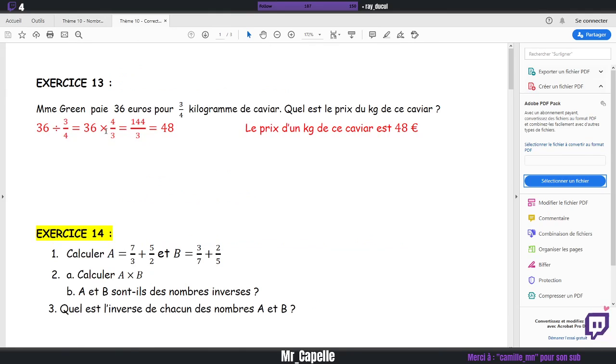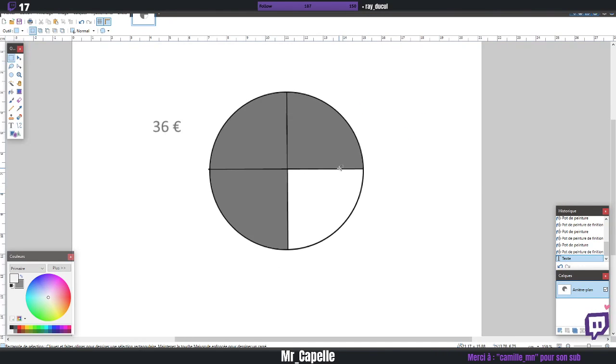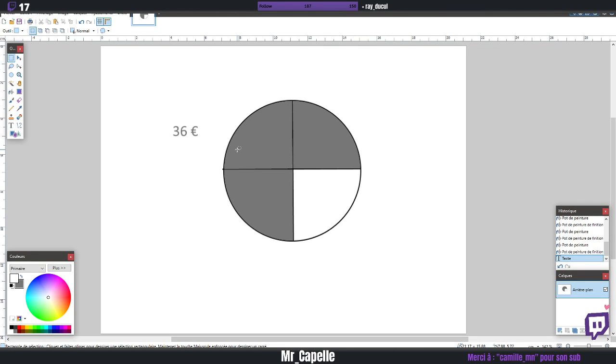En faisant ça, en fait, on retrouve le calcul qui est là. C'est-à-dire 36 fois 4 divisé par 3. 36 divisé par 3 fois 4. Donc ça, c'est la résolution que... Alors, si c'est flou, ça vient dans ce cas-là de ta connexion, a priori.